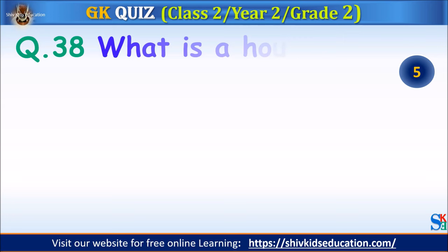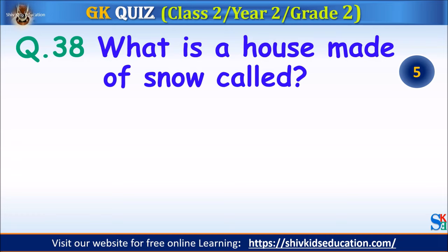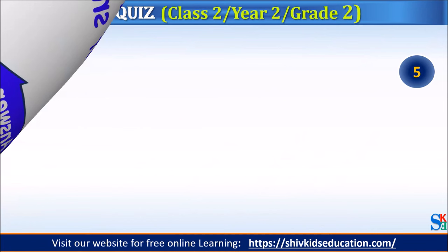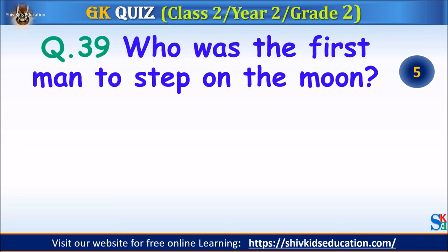Question 38: What is a house made of snow called? Your time starts. The answer is an igloo. Question 39: Who was the first man to step on the moon? Your time starts. The answer is Neil Armstrong.